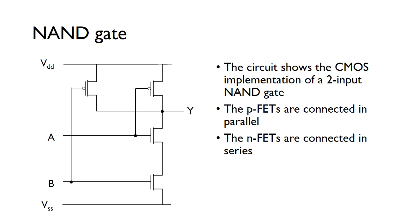More importantly, we're going to look at how to create a NAND gate. Because we know that from NAND gates we can create all of the logic gates. If we're able to create a NAND gate using transistors, we can then use these NAND gates to create all logic gates — that's the foundation of this hardware hierarchy. This shows the CMOS implementation of a two-input NAND gate.